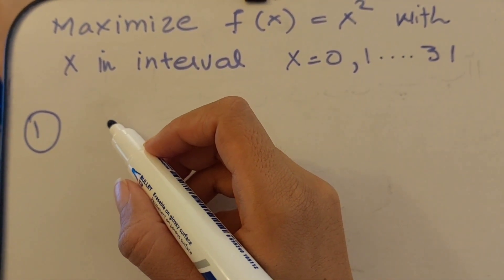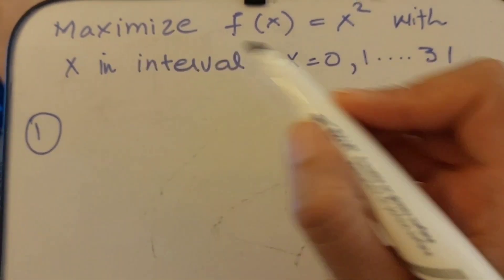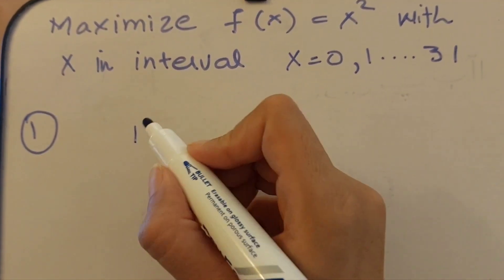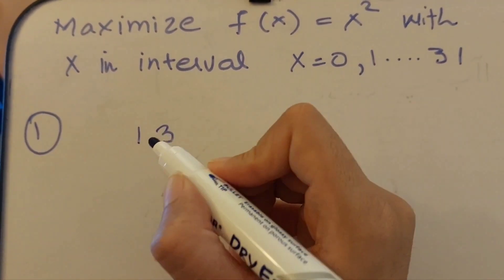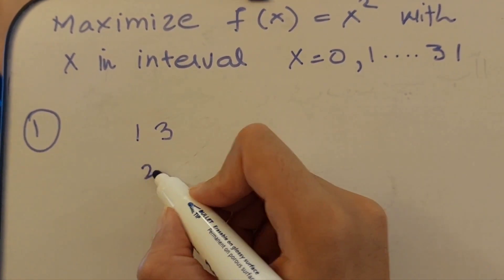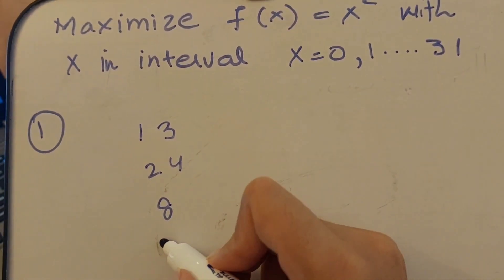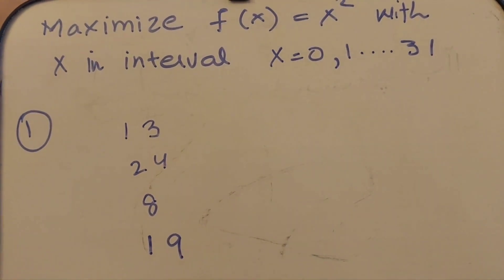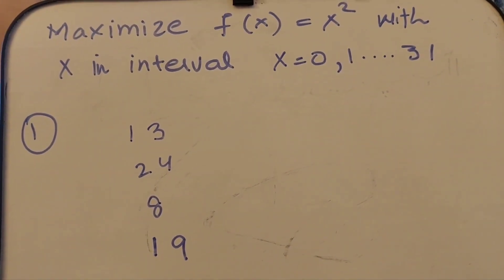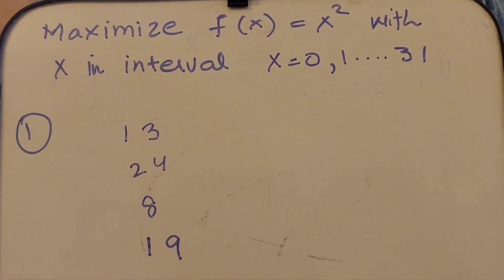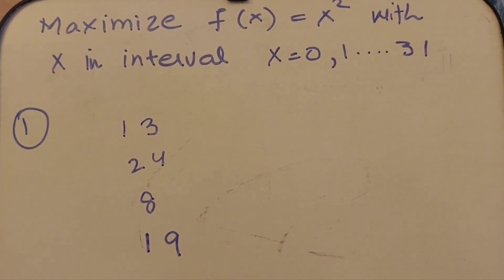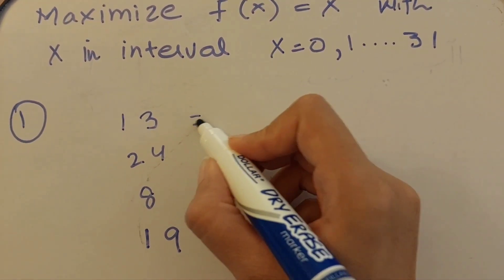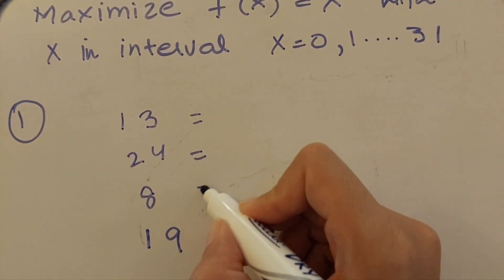First, I am going to initialize my population randomly — meaning I will randomly pick any numbers from the interval. So I'm picking 13, 24, 8, and 19. This is my random population. Once I am done picking this population, the first step I am going to do is coding, which means I am simply going to convert these numbers into their binary representations.